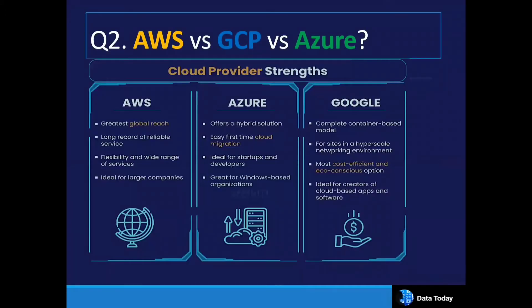Another common interview question is: what is the difference between AWS, Google Cloud Platform, and Microsoft Azure? Amazon provides AWS, Google provides GCP, and Microsoft provides Azure. These cloud providers offer various services — some are similar and some differ. AWS is ideal for larger companies, is flexible, has a wide range of services, and has the greatest global reach with the most data center regions.